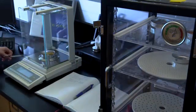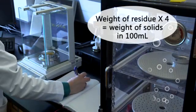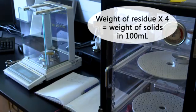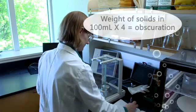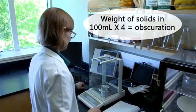Subtract the initial from the final weight to get the weight of the residue. Multiply the weight of the residue by 4 to determine the weight of solids in 100 milliliters. Then, multiply the weight of the solids in 100 milliliters by 4 again, which will equal the obscuration.